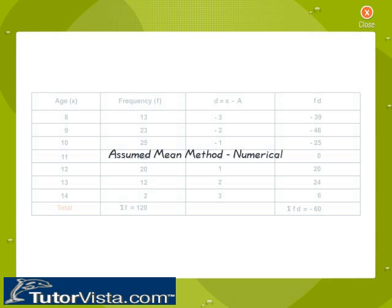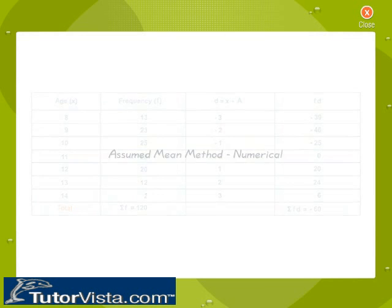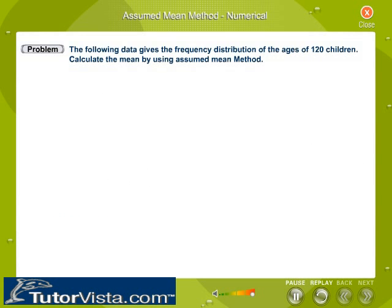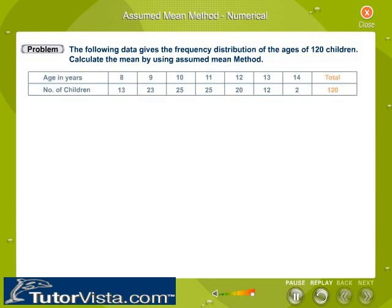Assumed mean method — numerical problem. The following data gives the frequency distribution of the age of 120 children. Calculate the mean by using the assumed mean method.